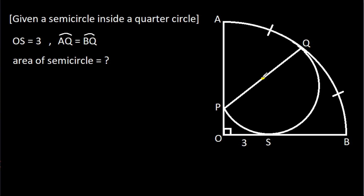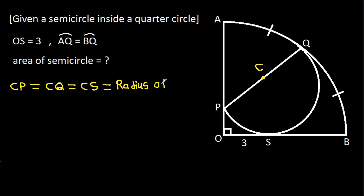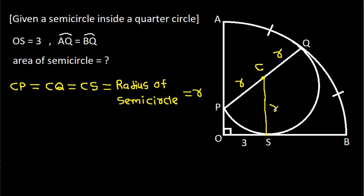Suppose the center of the semicircle is C. Then CP, CQ, and CS will all be equal to the radius of the semicircle. Let's call this radius R, so CP = R, CQ = R, and CS = R.